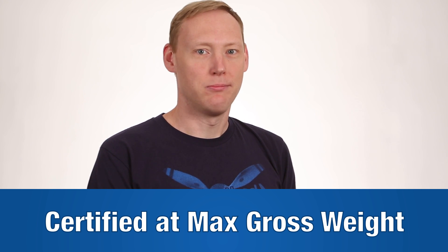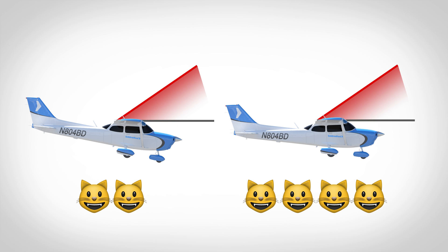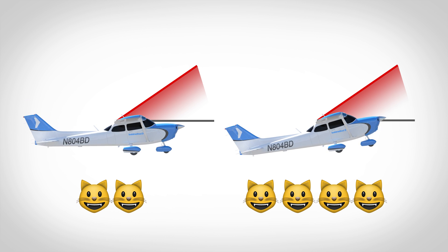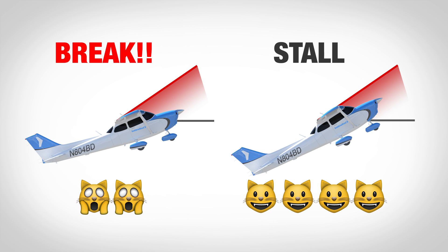But there's one problem: manufacturers certify design maneuvering speed at maximum gross weight. So what happens if you lose a few passengers and you're a little bit lighter? VA actually slows down. This is a little counterintuitive, but think about this: if you're still at that max gross weight VA speed and you lose some weight, now you're flying at a lower angle of attack. If you pull back on that yoke, you're going to hit 3.8 G's before you hit your critical angle of attack, and now you'll break before you stall. So just remember: as you lose weight, you slow down VA.